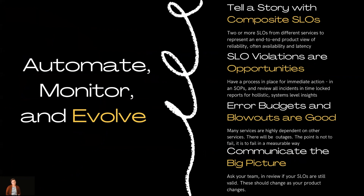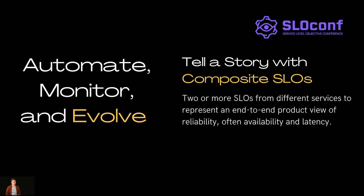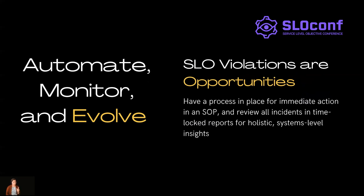If you have your SLIs, SLOs, and error budgets in place, you're in an excellent position — you've automated, you're now monitoring. The important part is to take that as a practice and continuously evolve. SRE is an iterative process. The first step is to tell a story with composite SLOs: make sure you have two or more SLOs from different services representing an end-to-end product view. The best places to start are availability and latency. You can have these as reports or visualized dashboards. Start simple — two to five SLOs — so they don't become just another form of cognitive overhead.